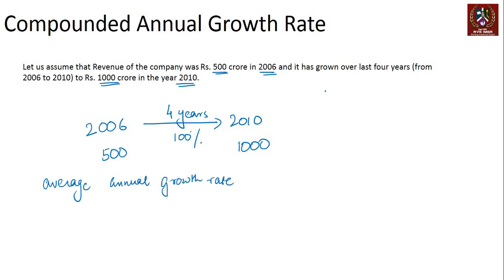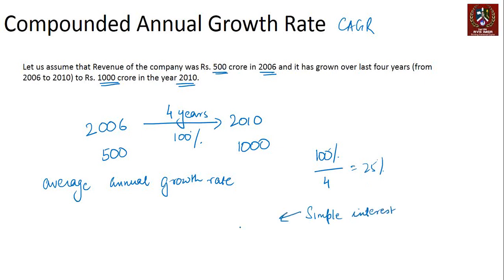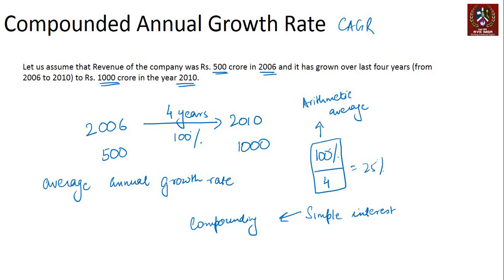What we're trying to find out is what is called the CAGR. One way to look at average is 100% divided by 4, which gives 25%, but that would only work for a simple interest scenario. In reality, there is compounding happening, which means simple arithmetic average does not work in real life.